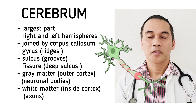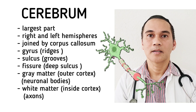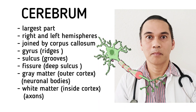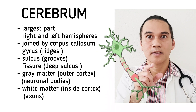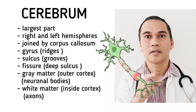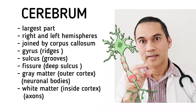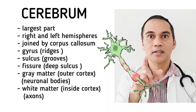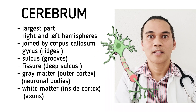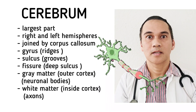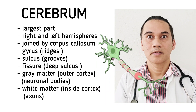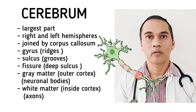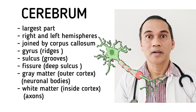The gray matter is composed of the neuronal bodies. If you look at the neuron, we have the body, and in the body we have the dendrites, the nucleus, the axon, and then the axon terminal. The neuronal bodies, the dendrites, and the nucleus constitute the gray matter, which is the outer part of the cerebrum — the outer cortex. Those gray matter structures are involved in complex processes.